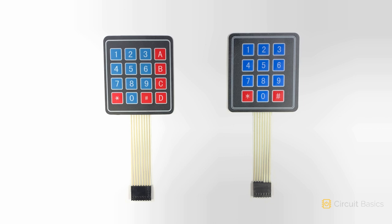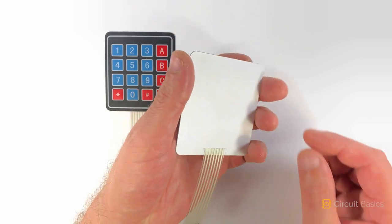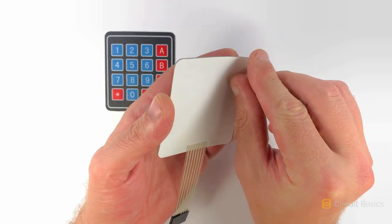This 3x4 keypad has 4 rows and 3 columns. These are what is known as membrane keypads. They're really thin, and there's an adhesive on the back so they can be attached to flat surfaces.